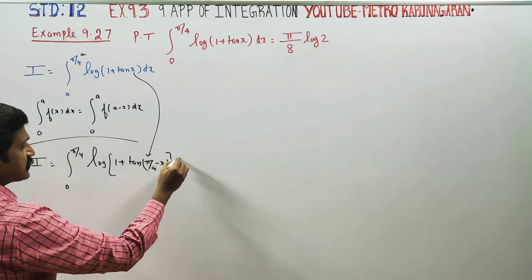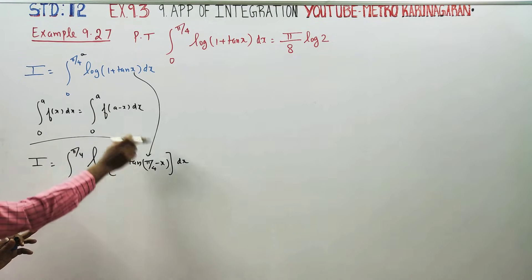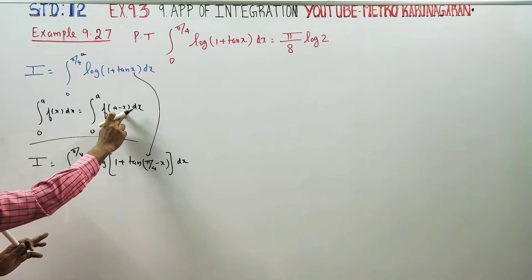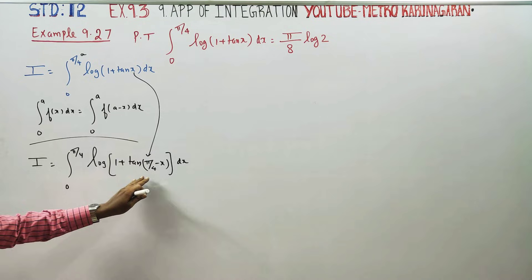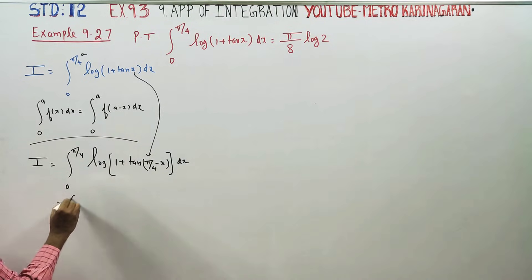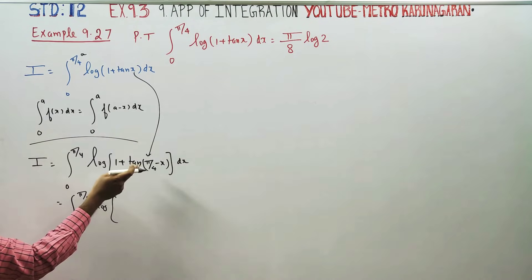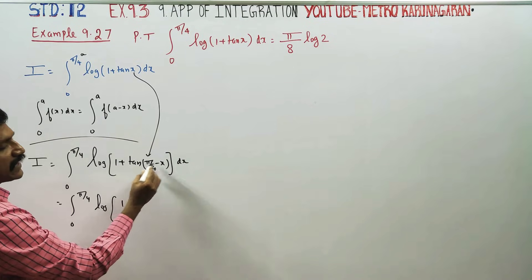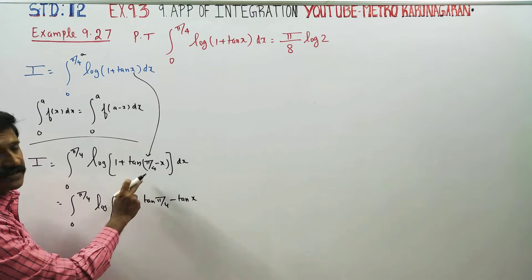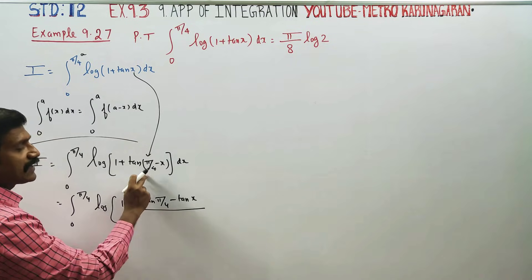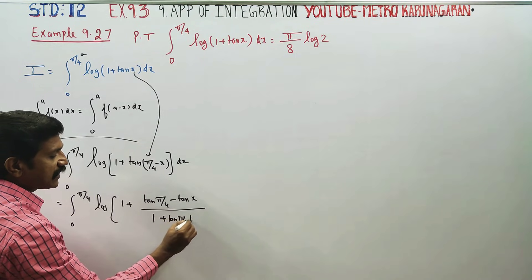Using the property, the original sum becomes 0 to pi by 4, and we apply the tan(a minus b) formula from 11th standard compound angles: tan(a minus b) equals tan a minus tan b, divided by 1 plus tan a tan b.